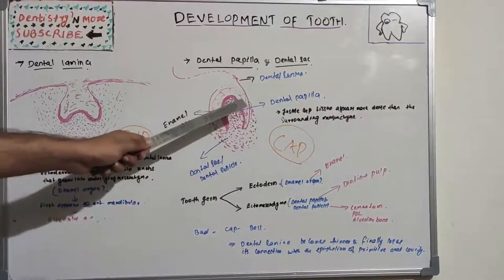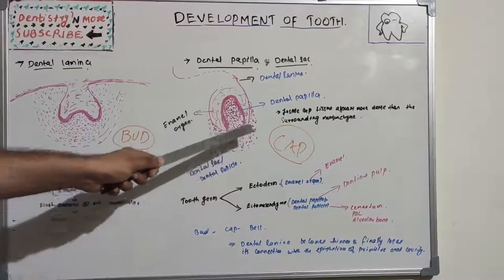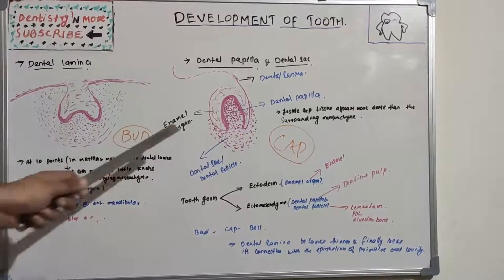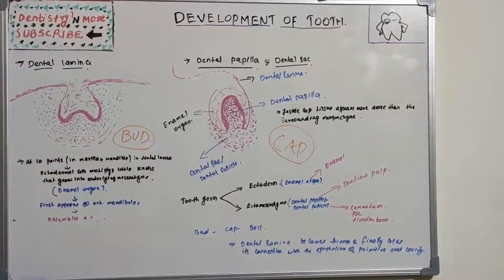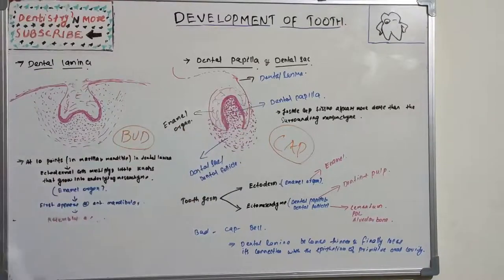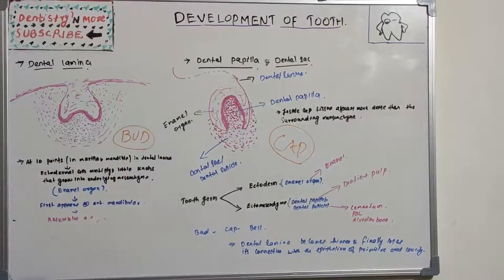The dental papilla is the inside of this cap, where ectomesenchyme cells increase in large numbers. This tissue appears denser than the surrounding mesenchyme and represents the beginning of the dental papilla. The cells within the cap undergo rapid multiplication, becoming more dense compared to tissue outside. This dental papilla gives rise to dentine and pulp. The dental lamina is soon to be detached from the developing tooth.